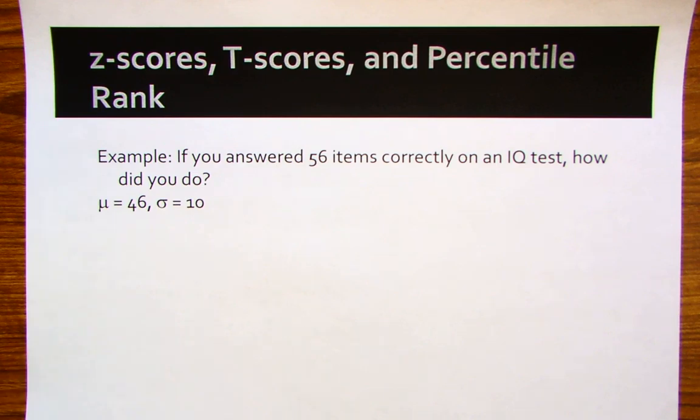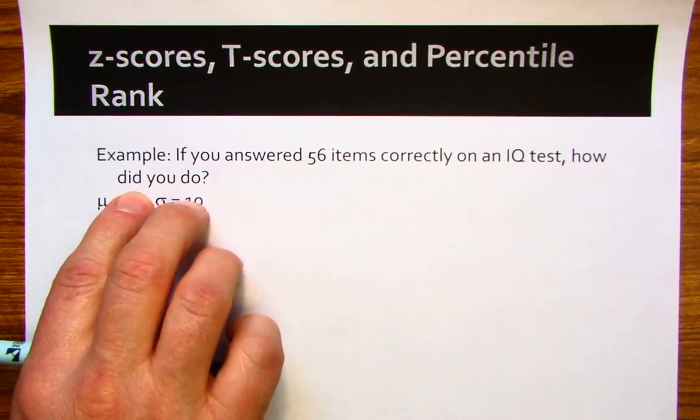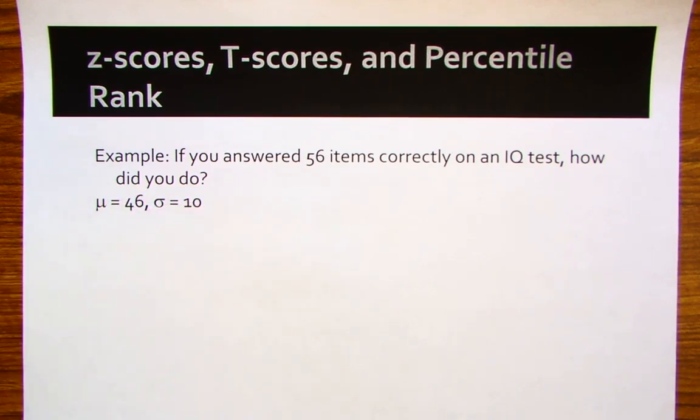In the example here, if you answered 56 items correctly on an IQ test, how did you do? Your immediate answer, without knowing the mean and the standard deviation, is you're not sure. You don't know how you did. What z-scores allow us to do is to see immediately how we did compared to other people.